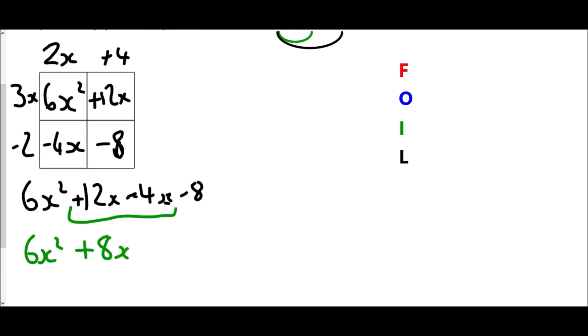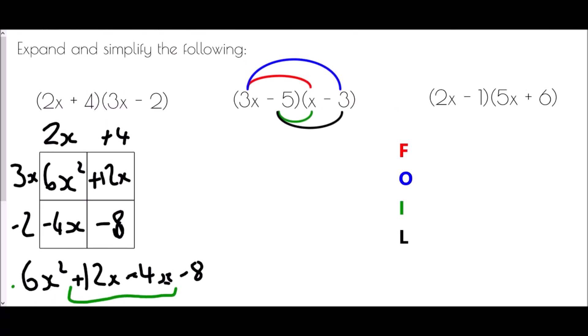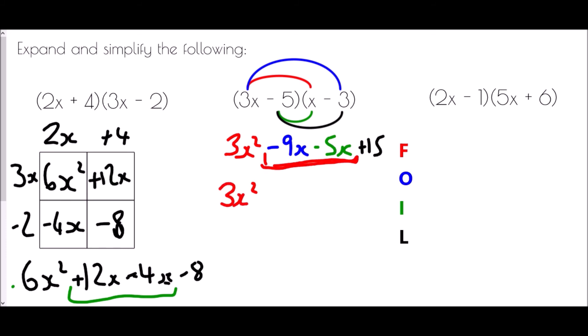Using the claw method: the red arrow gives three x times x which is three x squared. The blue arrow, three x multiplied by negative three, is negative nine x. The green arrow, negative five times x, is negative five x. The black arrow, negative five times negative three, is plus fifteen. Simplifying the middle: three x squared, then negative nine minus another five is negative fourteen x, plus fifteen.